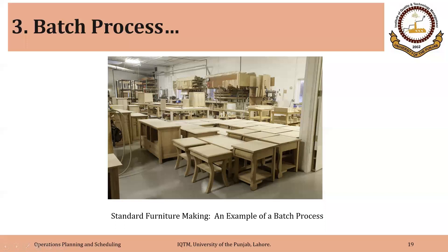Another example is furniture making. You need specific equipment like a routing machine, some painting or polishing mechanism, and some manual operations, but you can make different types of furniture using these few types of resources, equipment, or machines.